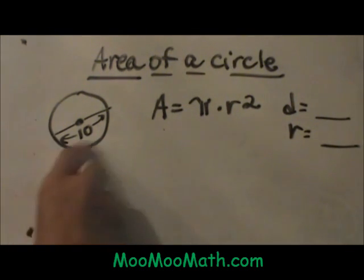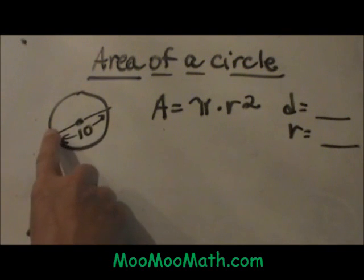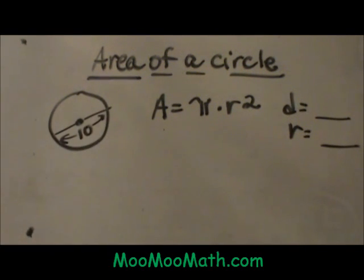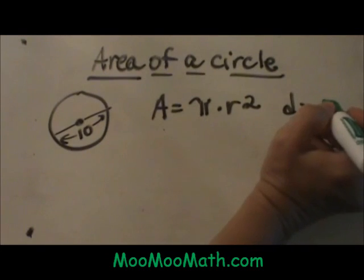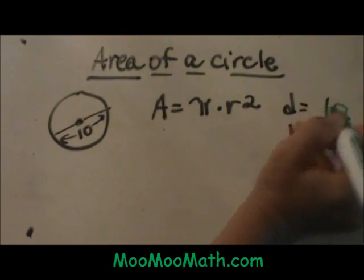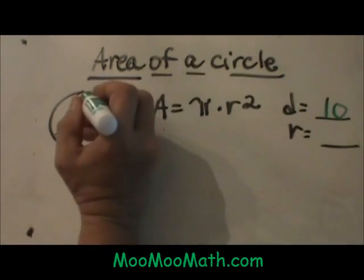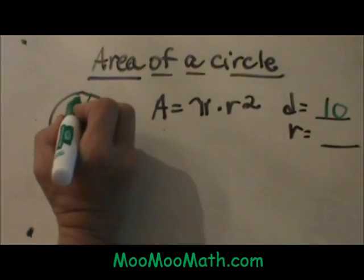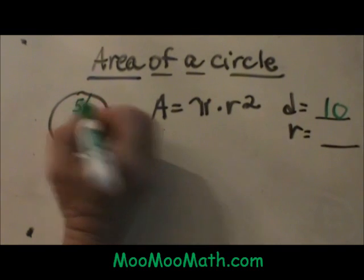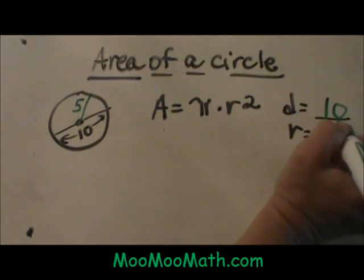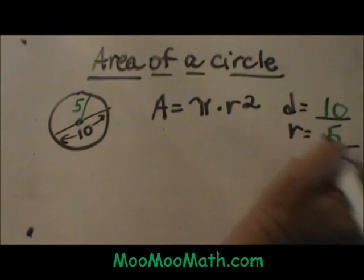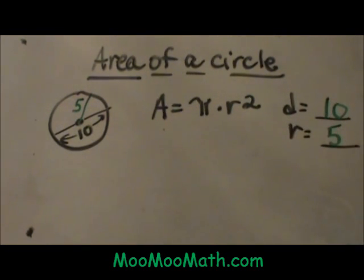Let's go over here and look at this example. We have a circle and we have a diameter of 10. Let's define that and write all your parts down. My diameter is 10, so that means my radius is half of that distance, so my radius is 5. That is a 1 to 2 ratio.